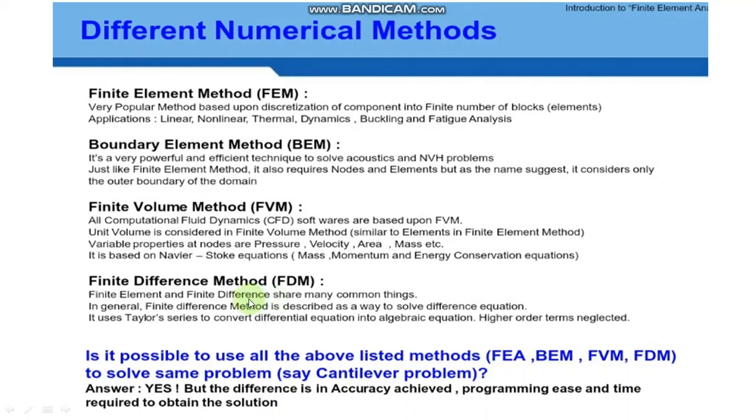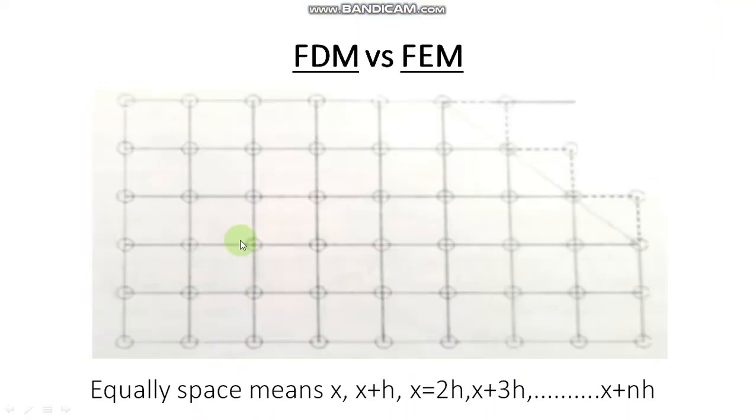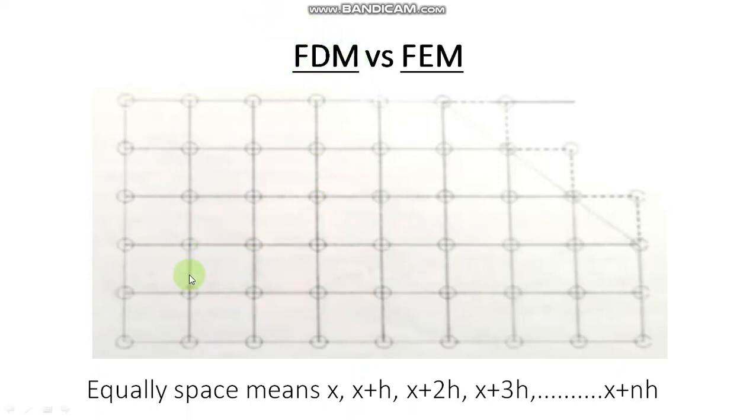Before going to start, FDM means Finite Difference Method. Now first we discuss finite difference and interpolation. Actually finite difference is nothing but equally spaced. Equally space means x, x plus h, x plus 2h, x plus 3h, up to x plus nh.